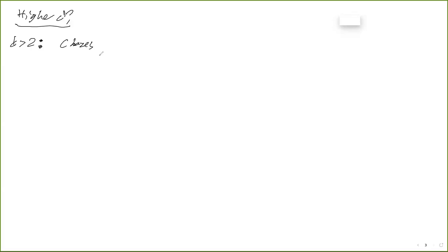What about higher dimensions? Bernoulli percolation in intermediate dimensions is notoriously hard. The only result I'm aware of that is true for general d > 2 is due to Lincold Chayes, also in the 90s: T_n grows more slowly than n^epsilon for any positive epsilon. So you have not just sublinear but sub-any-power growth. Kesten has in some notes that you can sharpen this to something like exp(C sqrt(log n)), which is fairly quantitative, but nobody really knows the right rate.